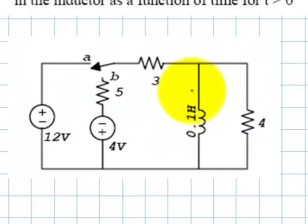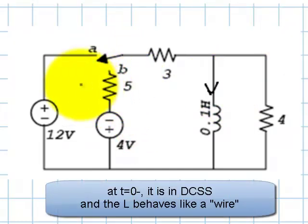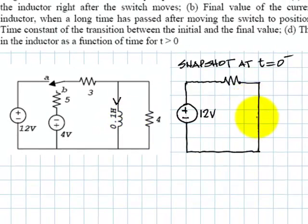We know that the current in this inductor is not going to change instantaneously, so if we compute that at zero minus, the current is going to be the same as zero plus, which is what they ask. Why compute that at zero minus? Because at zero minus, the circuit was in DC steady state, and this inductor could be represented by a wire, like this.